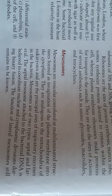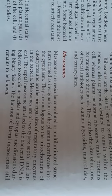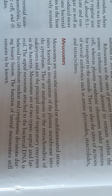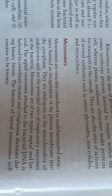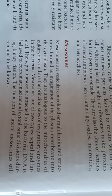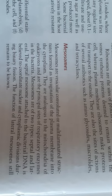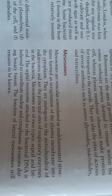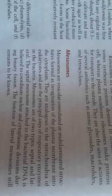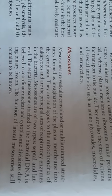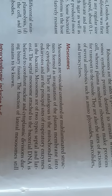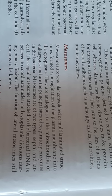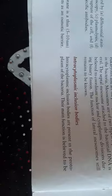Mesosomes are vesicular, convoluted, and multilamellar structures formed as invaginations of the plasma membrane into the cytoplasm. They are analogous to the mitochondria in eukaryotes and are the principal site of respiratory enzymes in bacteria. Mesosomes are of two types: septal and lateral. The septal mesosome, attached to the bacterial DNA, is believed to coordinate nuclear and cytoplasmic divisions during binary fission. The function of lateral mesosomes remains unknown.